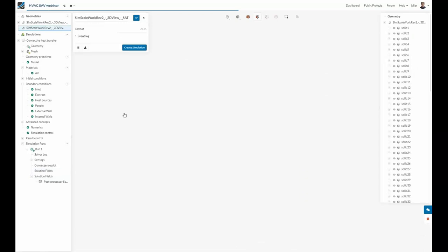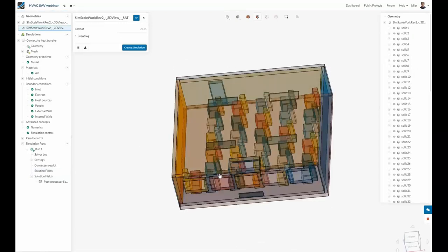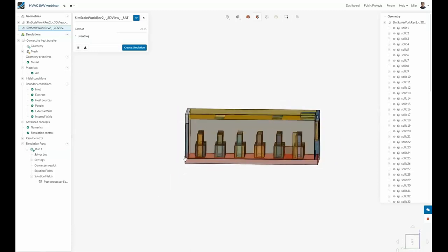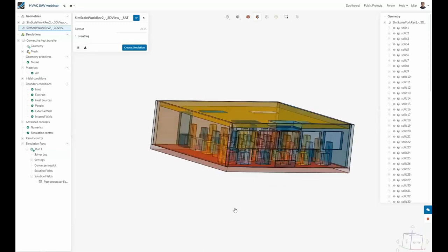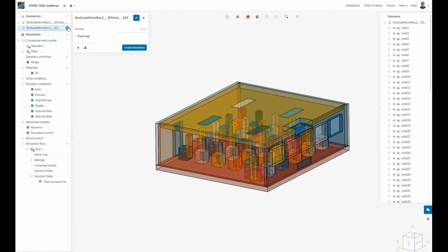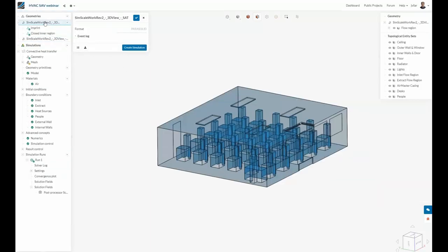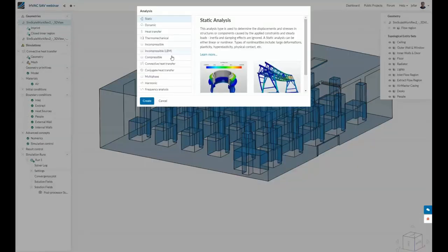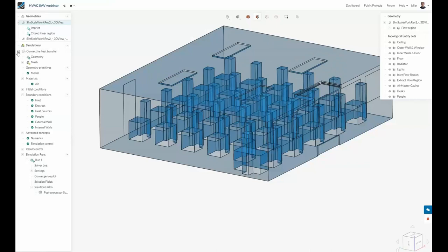So we will be back to the solutions in a while, but first we can take a look at the general setup for the simulation. So starting from the geometry, that's how the original model that we imported looks, right? So as I said, first we need to generate this extraction operation as we are not interested in the walls, in the roof, in the ground, just the inner volume. So we just generate a closed inner region here and we will get our geometry that will look like this one.